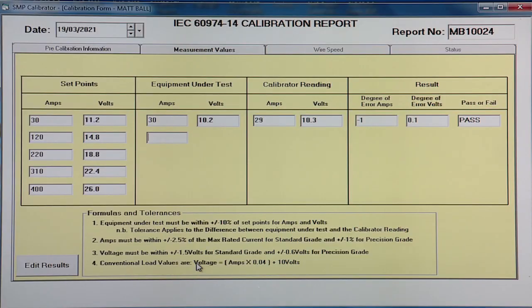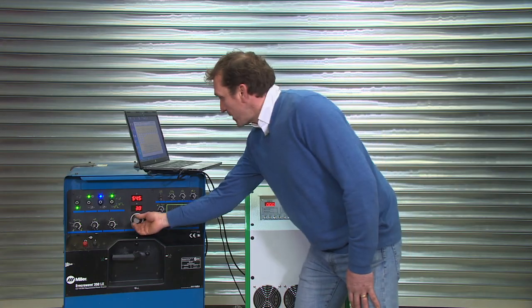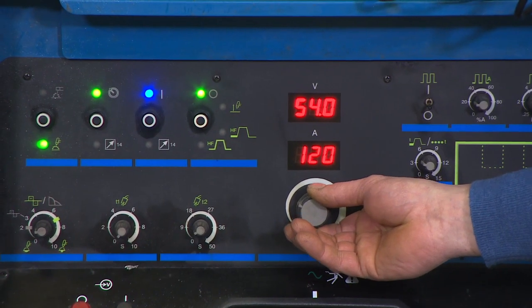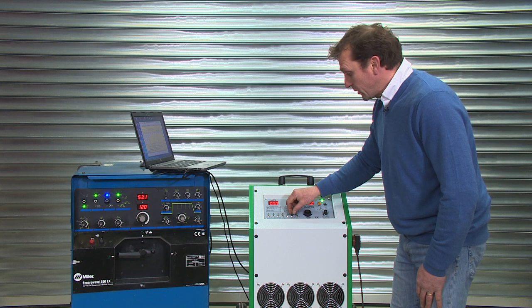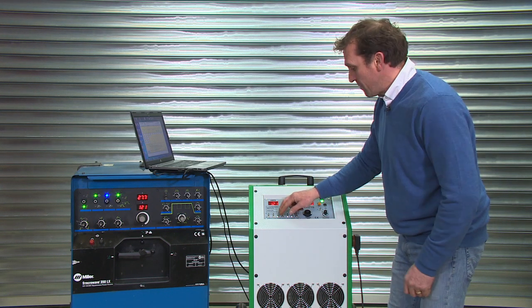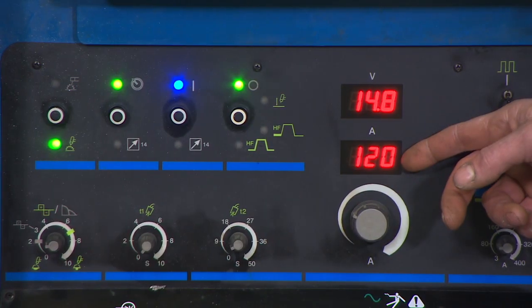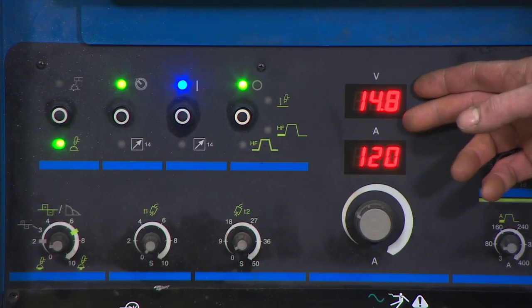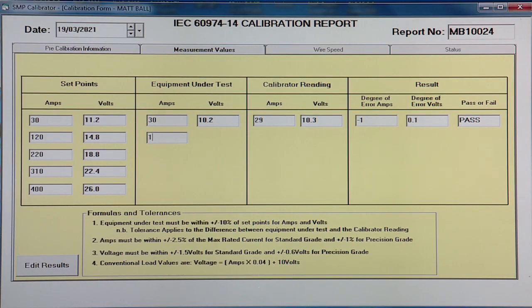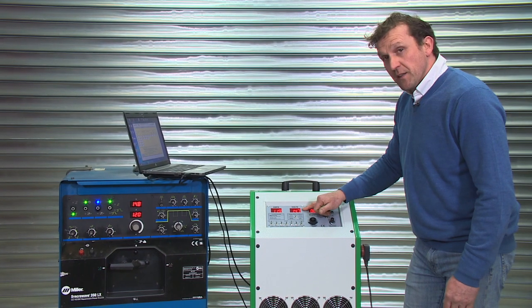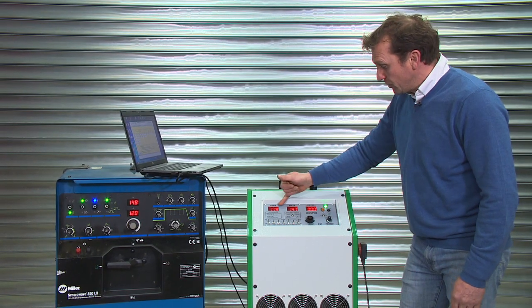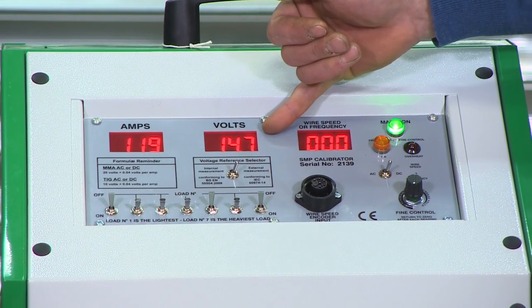Onto the second reading, 120 amps and 14.8 volts. So we set the machine to 120 amps and load up until we've got 14.8 volts within that 10% margin. We then enter the 120 amps and 14.8 volts into the program. And then the calibrator reading, 119 and 14.7.